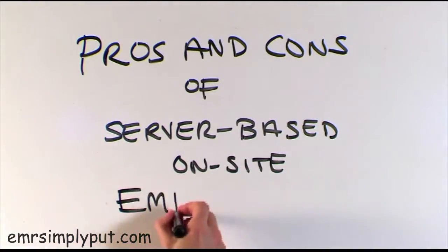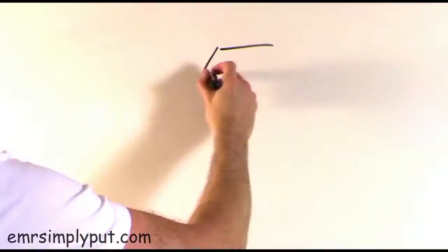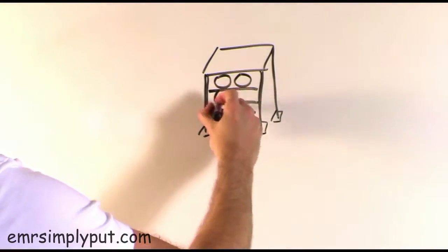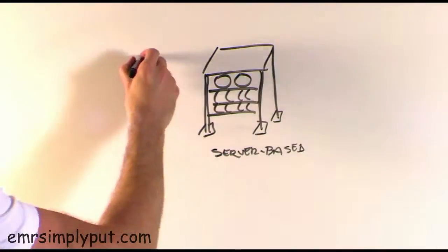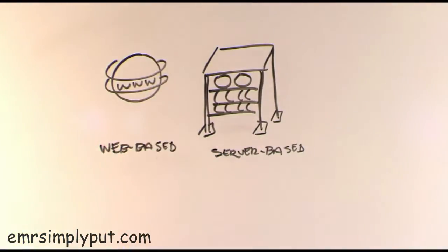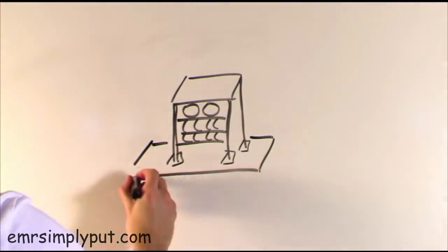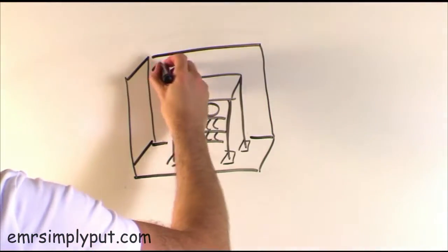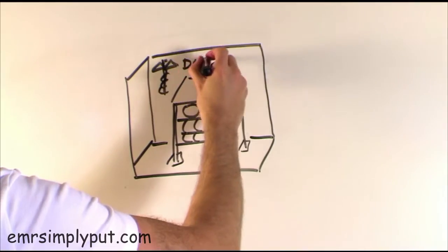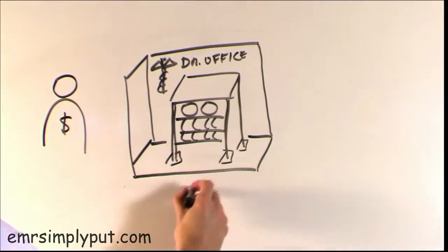In the last video, we discussed the two main kinds of EMR systems: server-based or on-site, and web-based or off-site. Server-based systems are physically operated and maintained on-site by the medical practice. The system is typically purchased on a per-provider license.